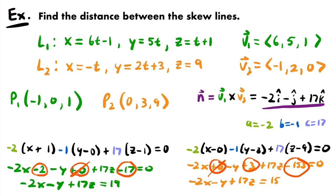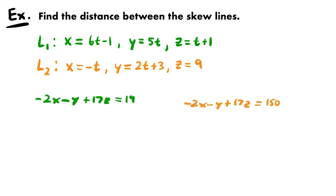So our two plane equations are: -2x - y + 17z = 19 and -2x - y + 17z = 150. Notice that both have the same x, y, z terms — the same values of a, b, and c — confirming they are parallel, since we used the same normal vector. The only difference is the d values: 19 and 150. That's what we'll use to find the distance between the planes and the skew lines.